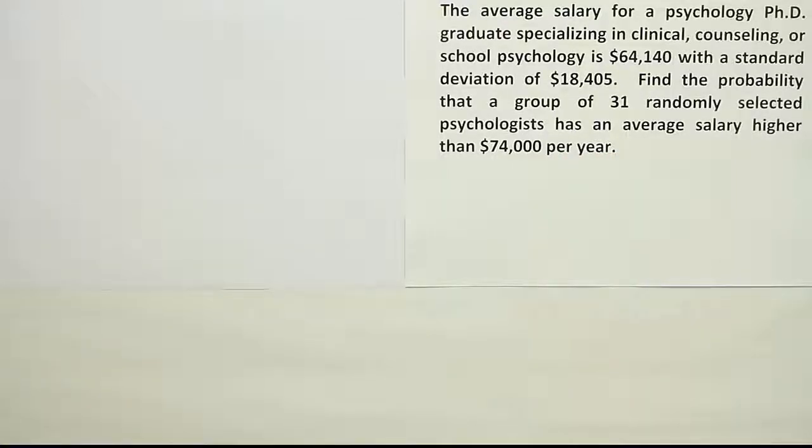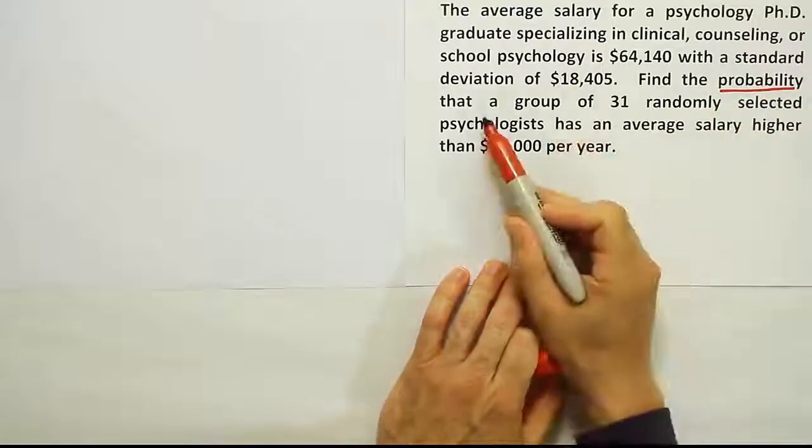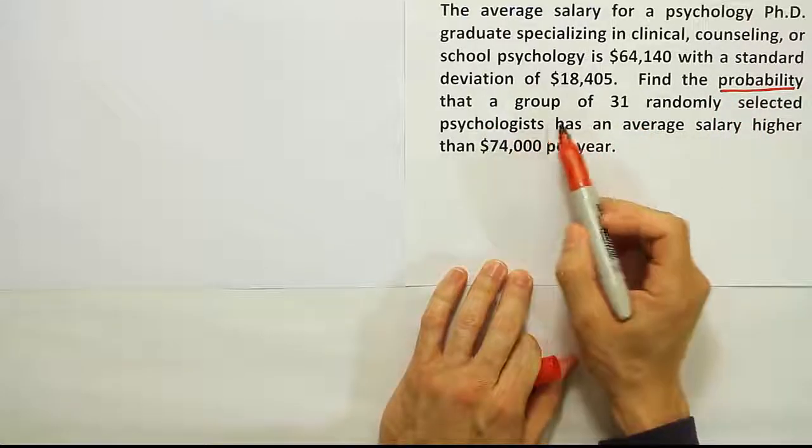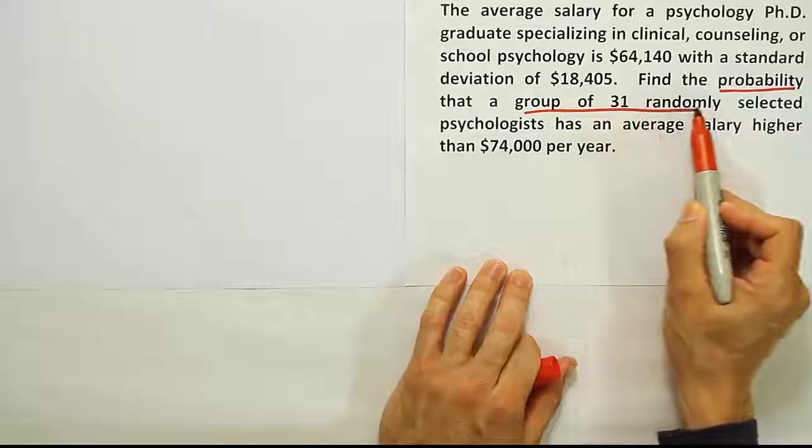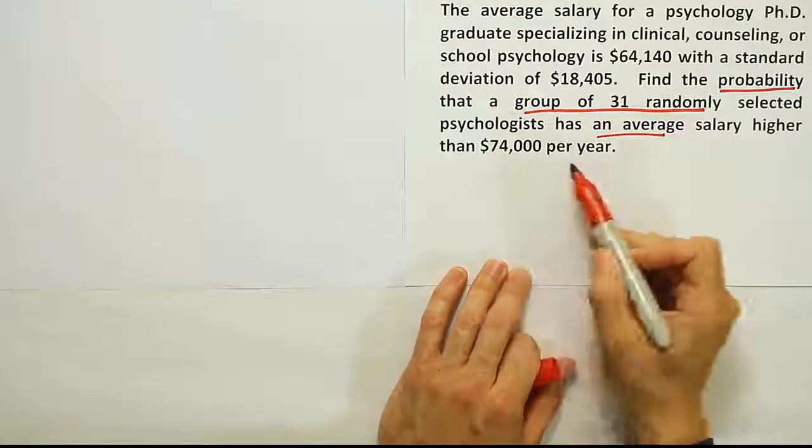Okay, so key words here, find the probability, right? Looking for a probability. And here's some more stuff. It says that a group of 31 randomly selected psychologists has an average salary higher than this value.